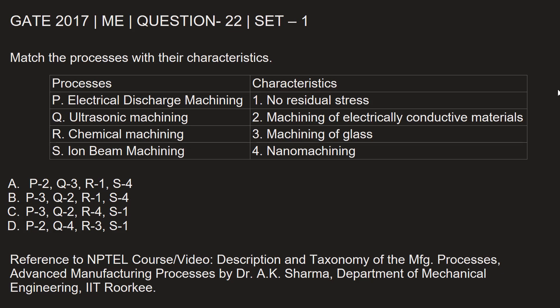This question is from GATE 2017 Mechanical Engineering Paper Set 1, Question Number 22: Match the processes with their characteristics. The processes given are P - Electrical Discharge Machining, Q - Ultrasonic Machining, R - Chemical Machining, S - Ion Beam Machining. The characteristics given are: 1. No residual stress, 2. Machining of electrically conductive materials, 3. Machining of glass, 4. Nano machining. Let's find out the correct matches.